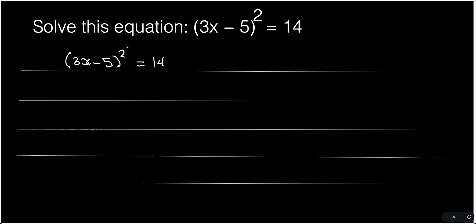We have to square root both sides to get rid of this 2 here. The square root cancels the square here, so I end up with 3x minus 5 equals, when you square root this number, you should write plus or minus square root of 14.